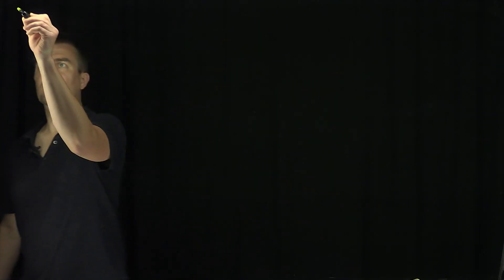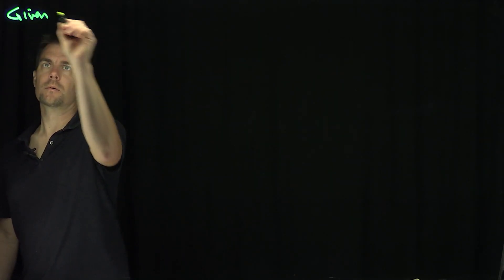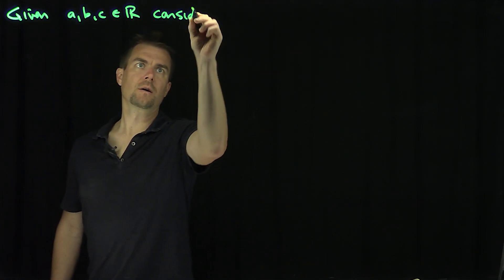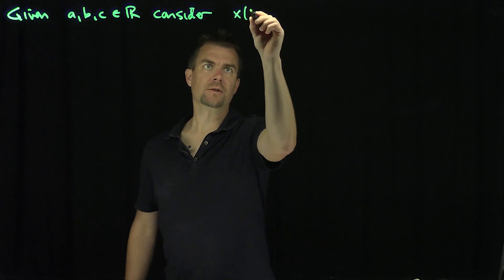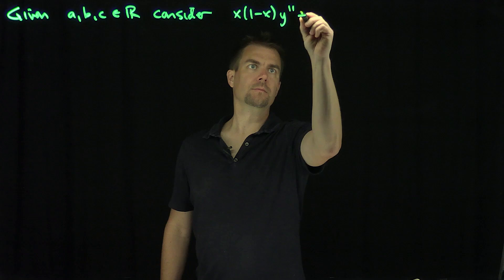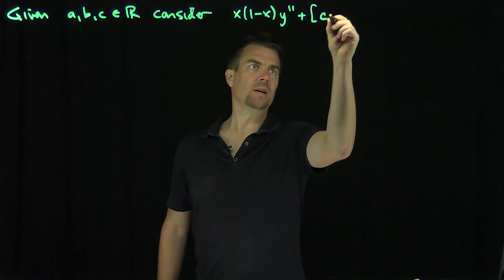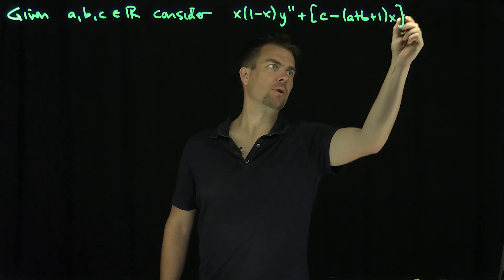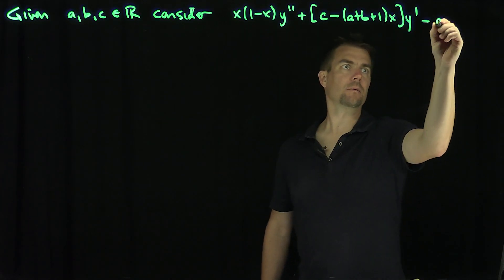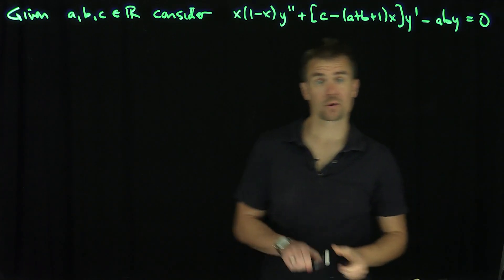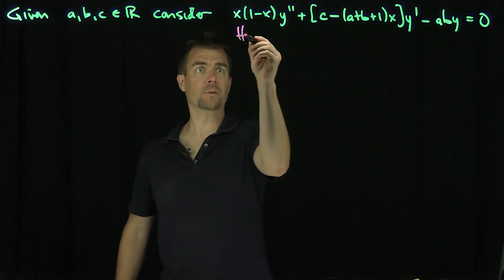Students, in this video we'll consider the hypergeometric equation. If we're given real numbers a, b, and c, consider the differential equation x times (1 minus x) y double prime, plus (c minus (a plus b plus 1)x) y prime, minus ab y equals 0. This is referred to as the hypergeometric equation.